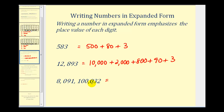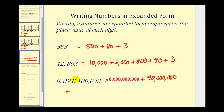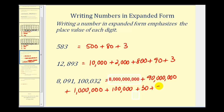For this eight, we have the thousands, millions, and billions — so this would be eight billion. Because there's a zero in the hundred-millions place value, we do not need to include that. So we have plus ninety million, plus one million, plus one-hundred-thousand. The next non-zero digit is this three, which represents thirty, and then plus two.